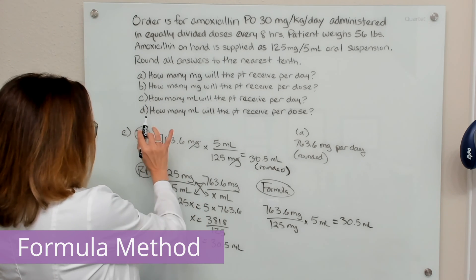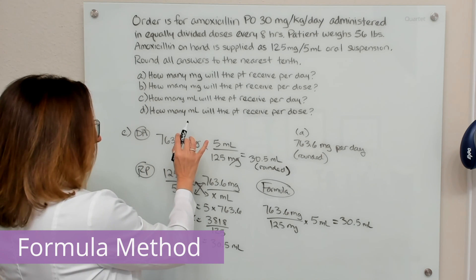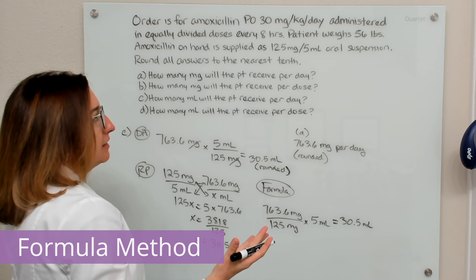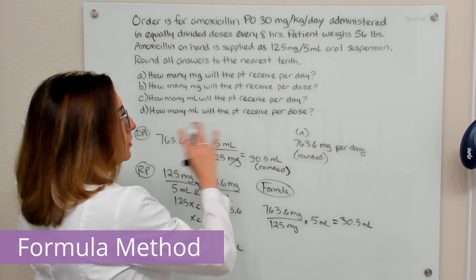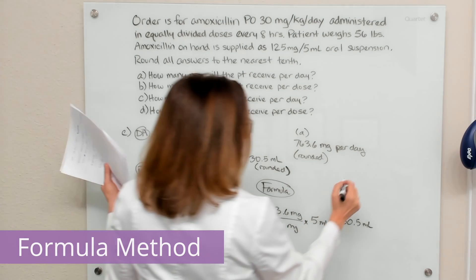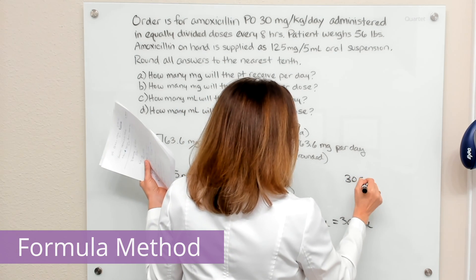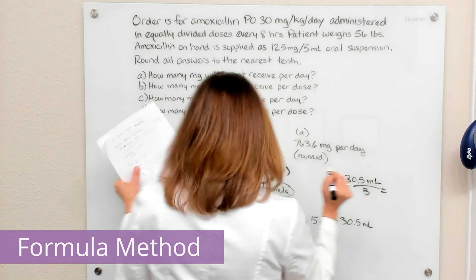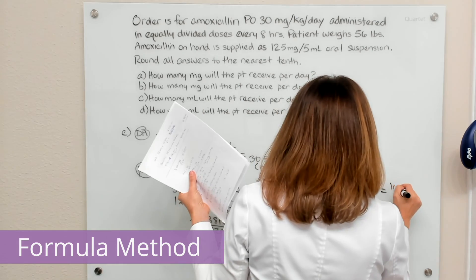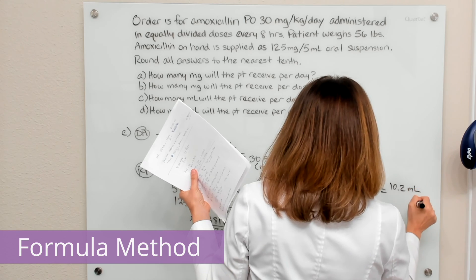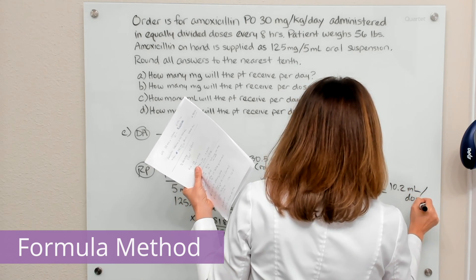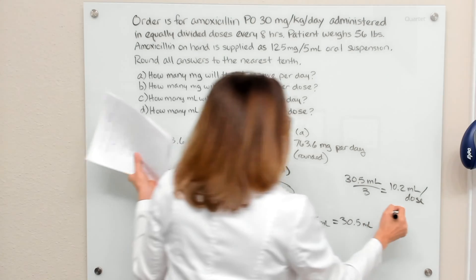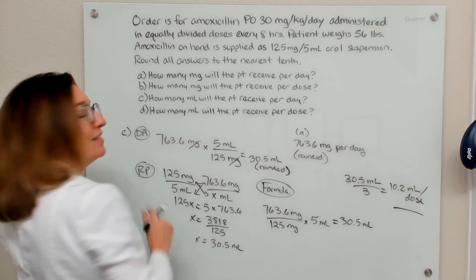Part D asks how many milliliters the patient will receive per dose. Since this patient is getting the medication three times a day, we take the daily amount of 30.5 mL and divide by three, which gives us 10.2 milliliters per dose, also rounded to the nearest tenth. That is the answer to D.